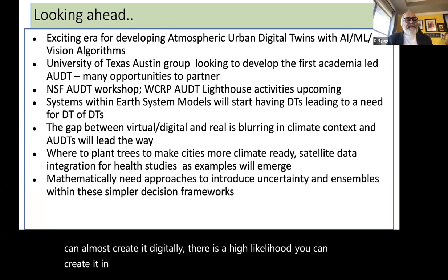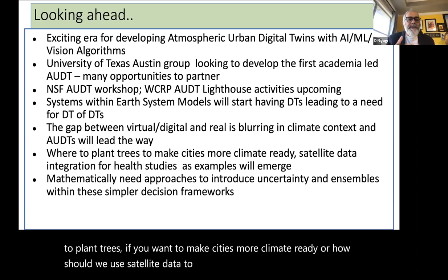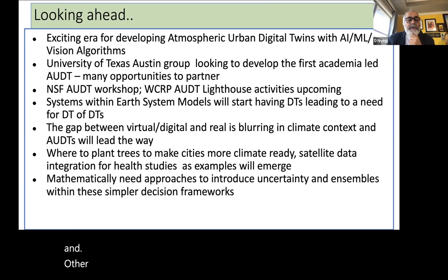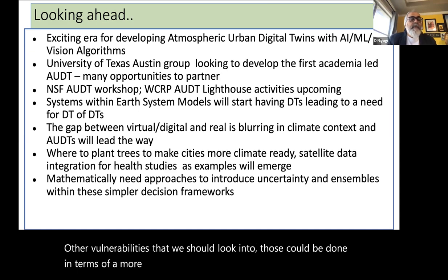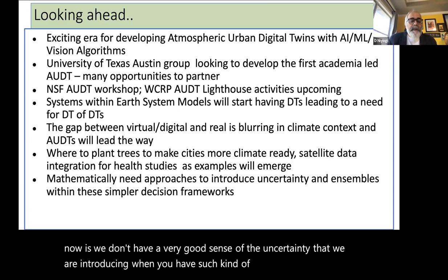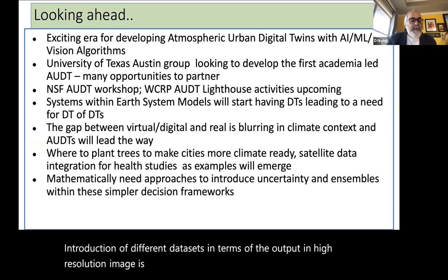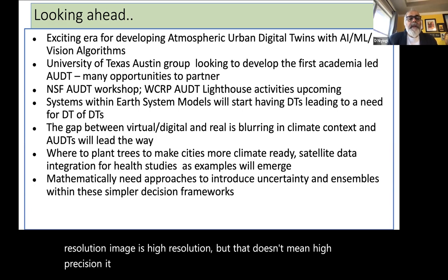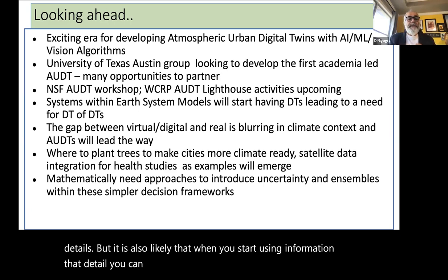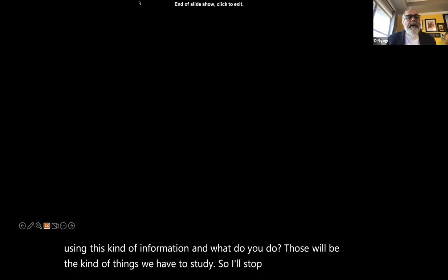More challenging problems remain. One key aspect is that we don't have a very good sense of the uncertainty we are introducing when integrating different datasets. A high-resolution image is high resolution, but that doesn't mean high precision — it could just mean more detail, and there's a real risk that using information at that detail can increase uncertainty. Understanding how to use this kind of information remains an important area of study.